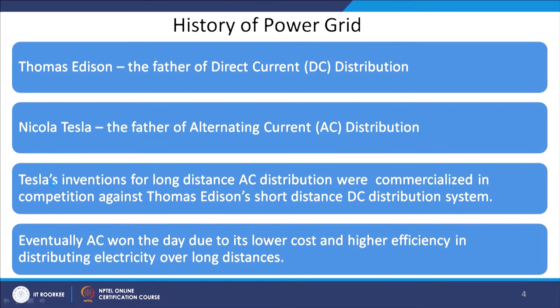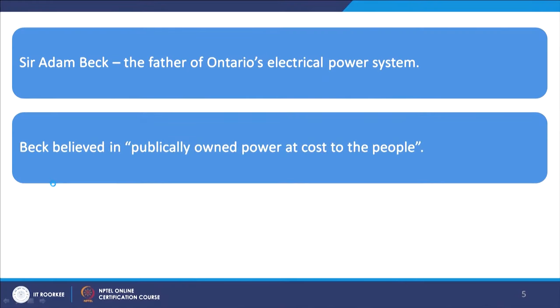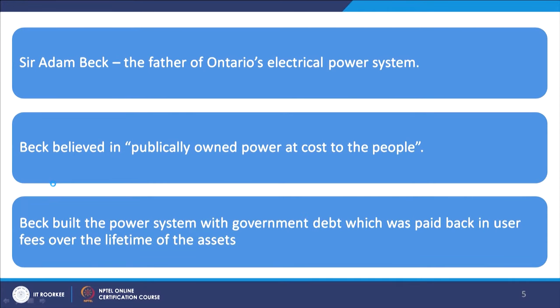Though DC distribution was equally popular similar to AC distribution, over a period of time it was realized that AC distribution system is more economical compared to DC distribution, especially when transmitting over long distances. Further, Sir Adam Beck, the father of Ontario's electrical power system, believed in the principle that publicly owned power costs less to the people. Beck built the power system with government debt which was paid back in user fees over the lifetime of the assets. Today the whole world depends on the AC system, which is reliable, robust, and works well for long-distance transmission.